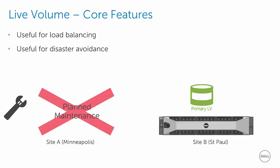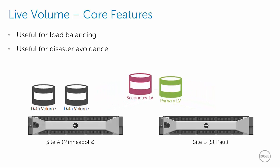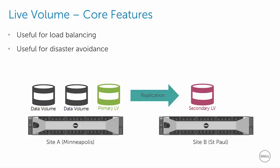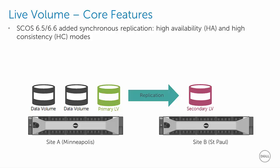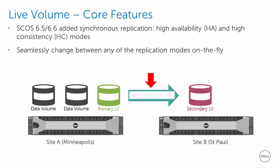Once the maintenance has been performed and the primary site comes back online, the primary live volume role can then be swapped back to the original location. This live volume functionality allows administrators great flexibility with business continuity planning by allowing them to gracefully move critical workloads and keep them running at alternate locations as long as necessary. With the release of SCoS 6.5 and 6.6, live volume was enhanced to include full support for synchronous replication, including both high availability and high consistency modes. Administrators can even change between any of the replication types on the fly with a few clicks, choosing between asynchronous and both types of synchronous replication while the workload is live and serving I/O without causing any downtime or service interruption.